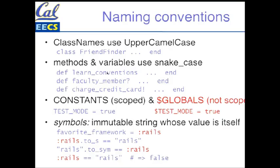Notice that method names can optionally end in a question mark — by convention, if a method returns a Boolean or is a predicate, you end it with a question mark. You can optionally end it with a bang if it's a dangerous method, one that does something destructive or that can't be undone. But those are conventions — you don't have to do that. Constants are in all capital letters and they're scoped, meaning they're visible only within the scope in which they're defined. There's also globals — they're in red because red is dangerous. Don't use globals. They begin with a dollar sign, are usually all upper case, and you can see and modify them from absolutely everywhere.